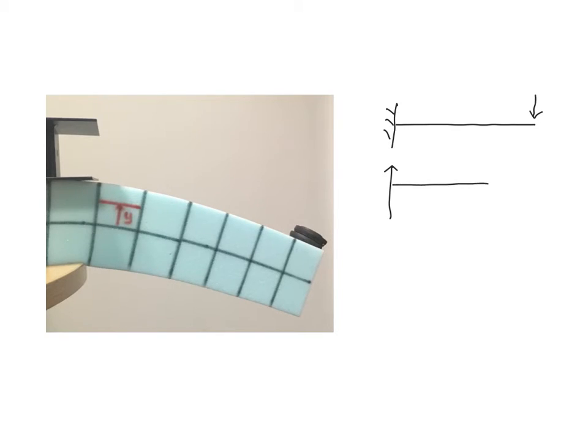It's a hogging moment - that means tension on the top of the beam - so we say the bending moment is negative using the common sign convention. Because it's a point load like that, it's just a linear increase in bending moment up to the support.